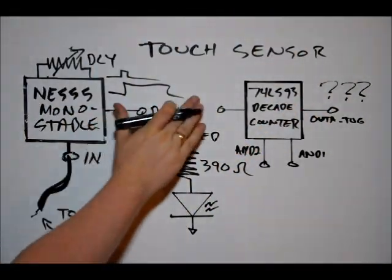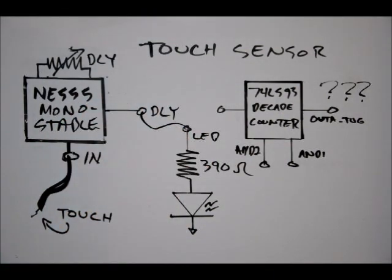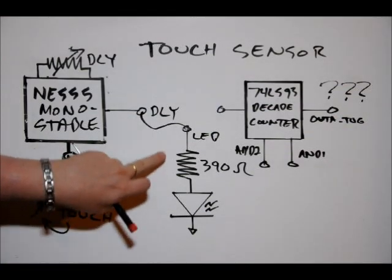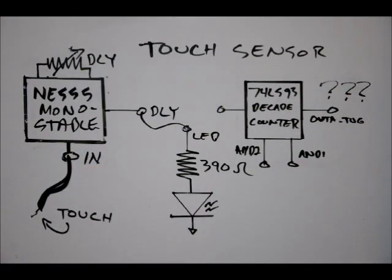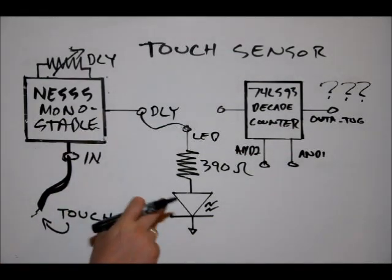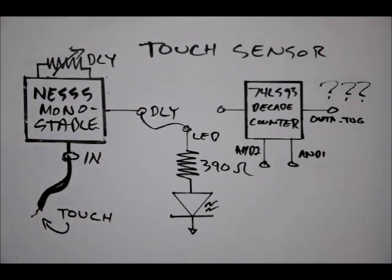We're going to calibrate that. We're going to connect our DLY output to our LED pin. The LED pin is connected to a 390 ohm resistor which limits current to our LED, our 3mm red LED. After we make that connection, we touch here, the LED will turn on for however long we've calibrated our pulse width to be.